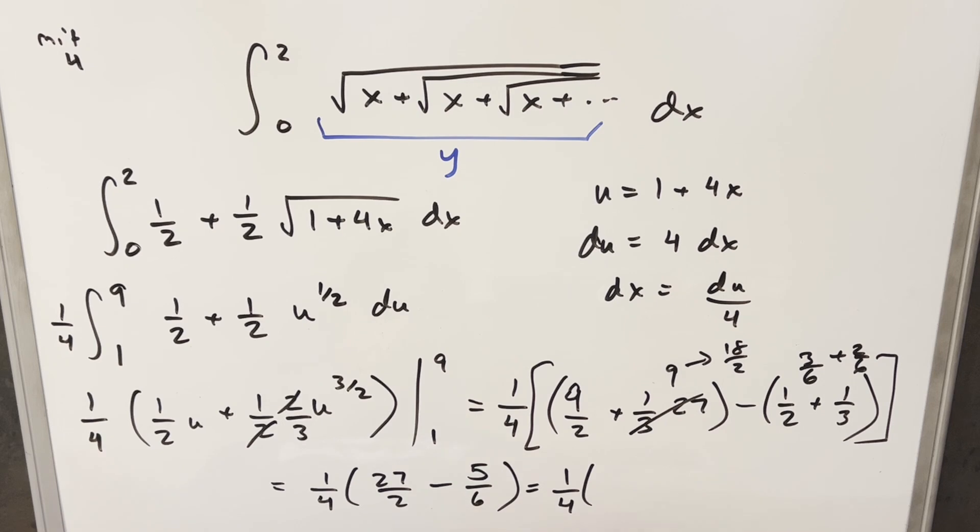Getting a common denominator, I can write 27 over 2 as 81 over 6 minus 5 over 6. We have 1 fourth times 76 over 6. Multiplying 1 fourth times 76 over 6 gives my final solution of 19 over 6.